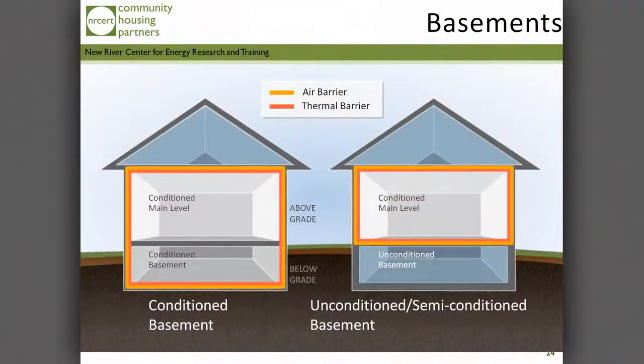If there's a living space down there — couch, futon, somebody's actually living there — and the system is sized appropriately and accounted for that space, then yes, it should be inside. But if it's supposed to be inside, what should the zonal pressure across that plane be? Zero.